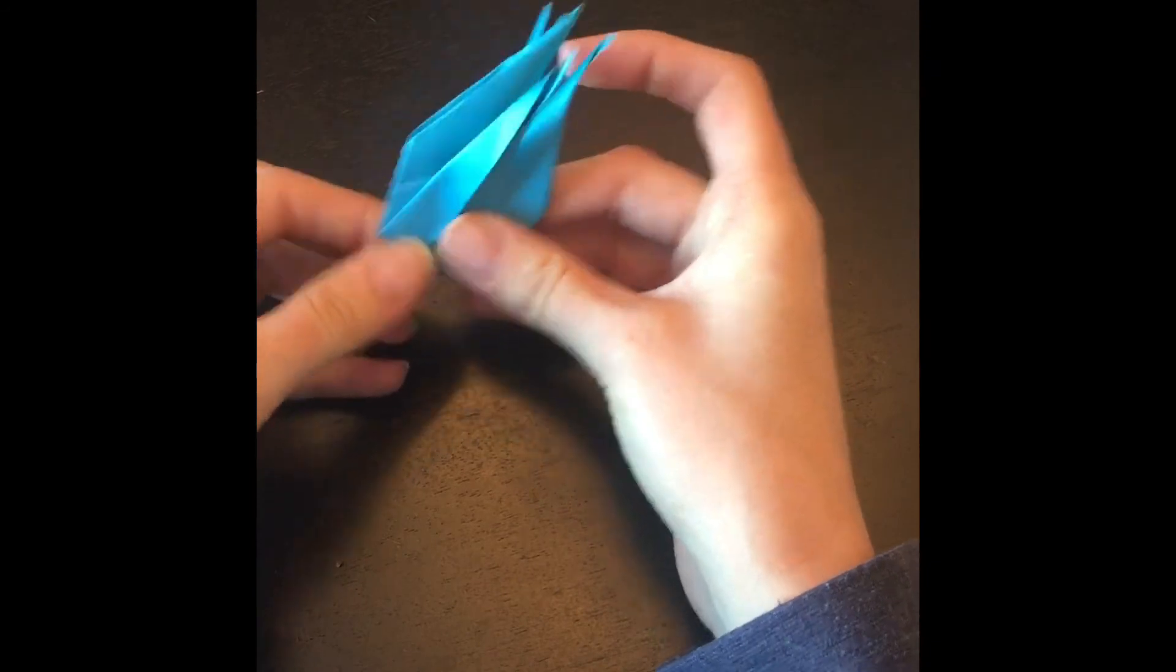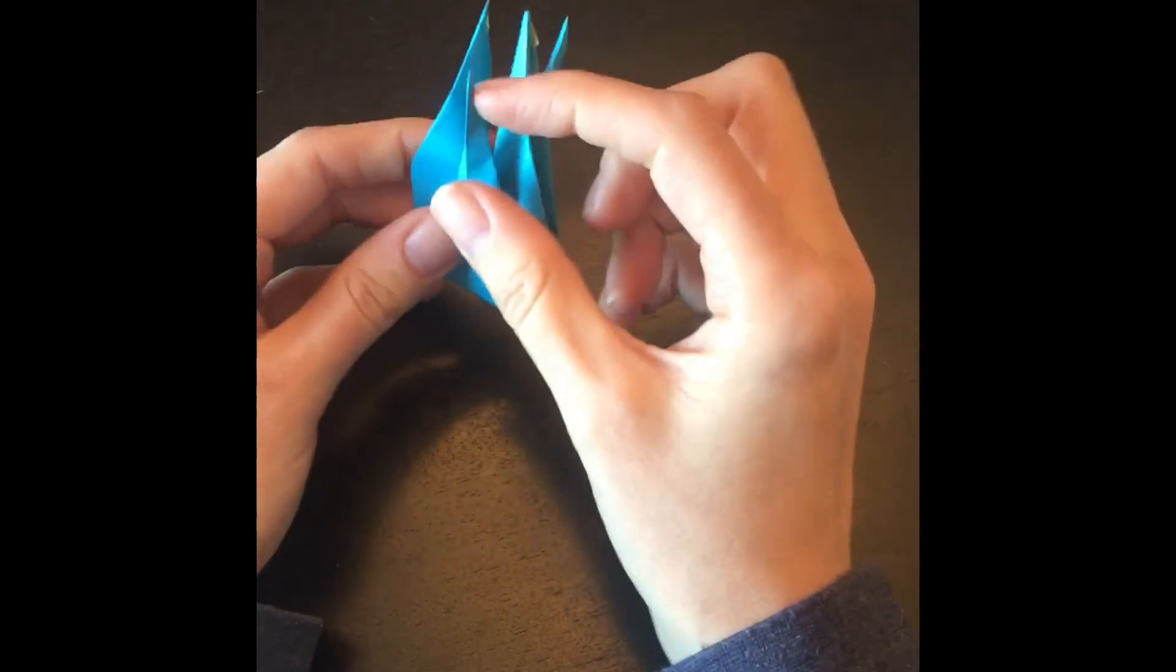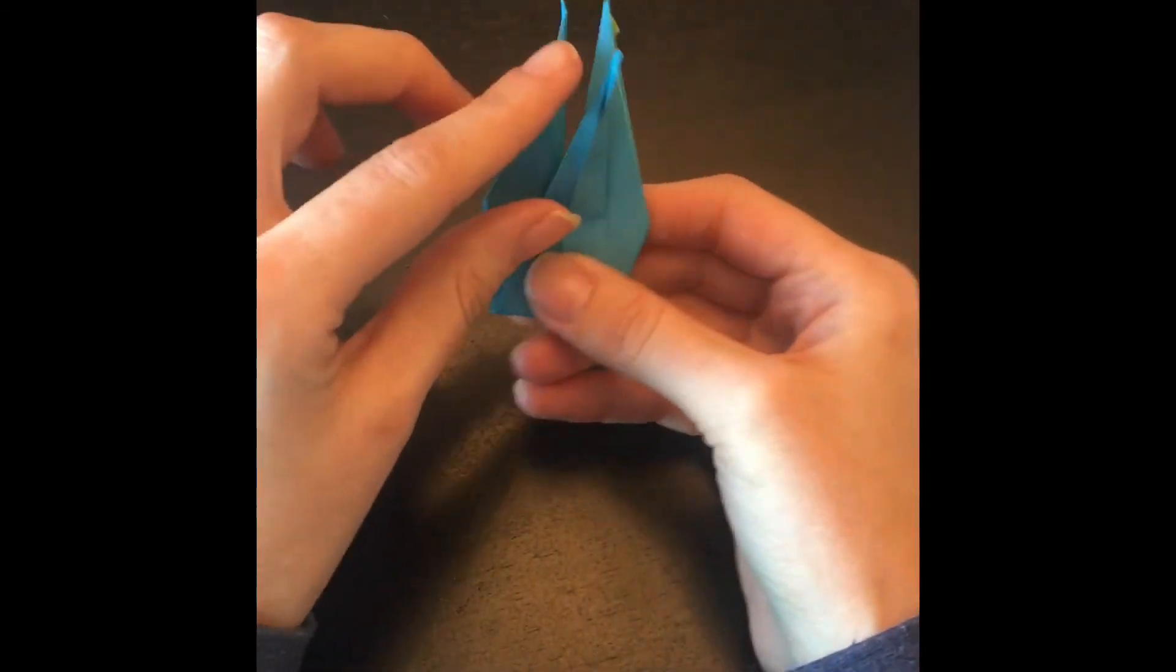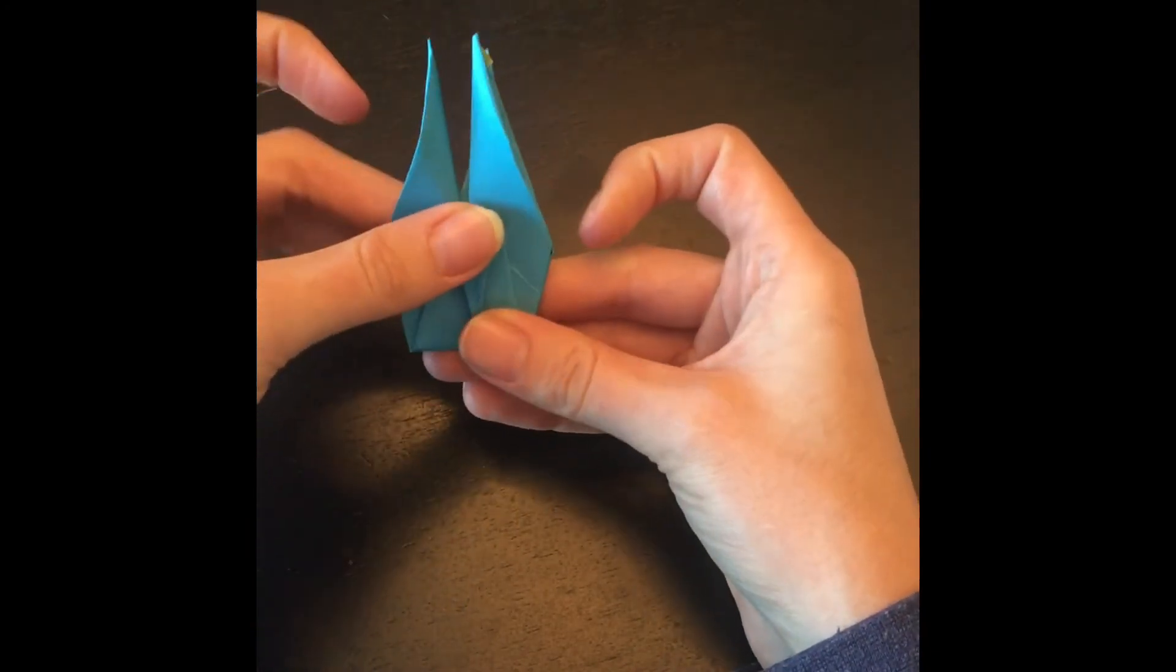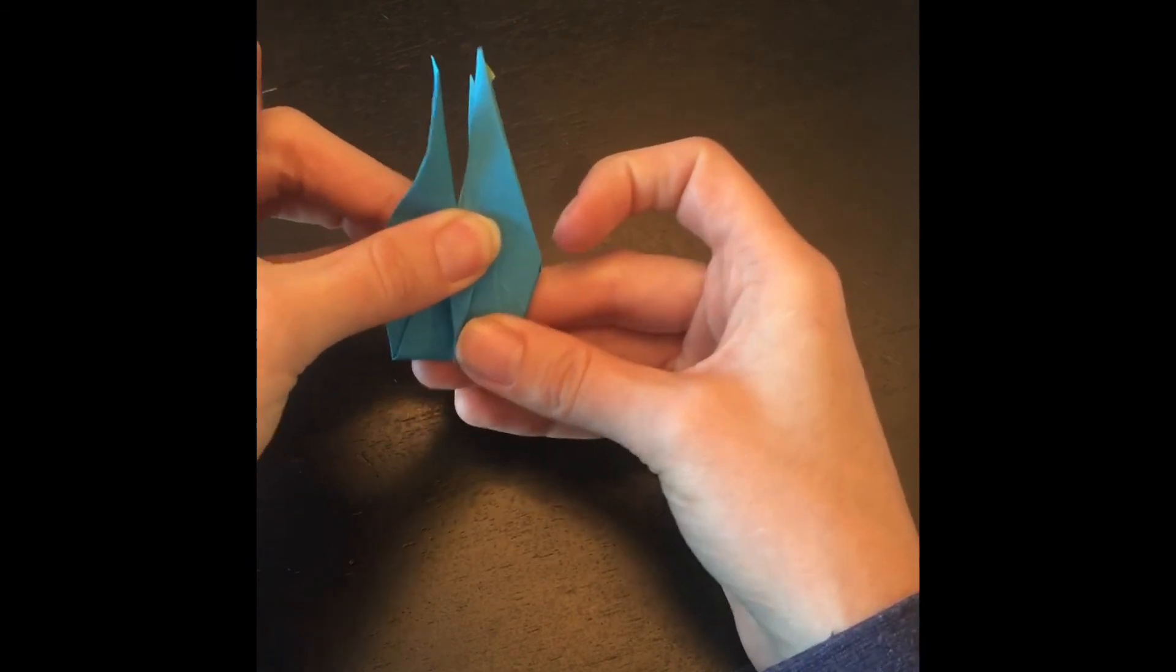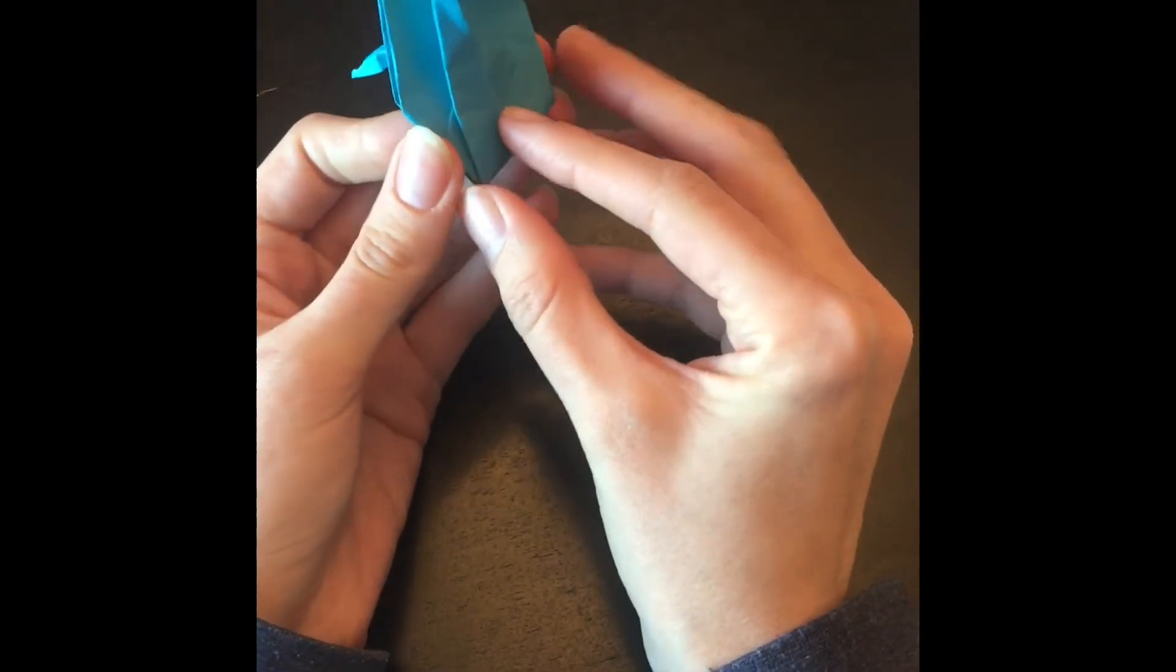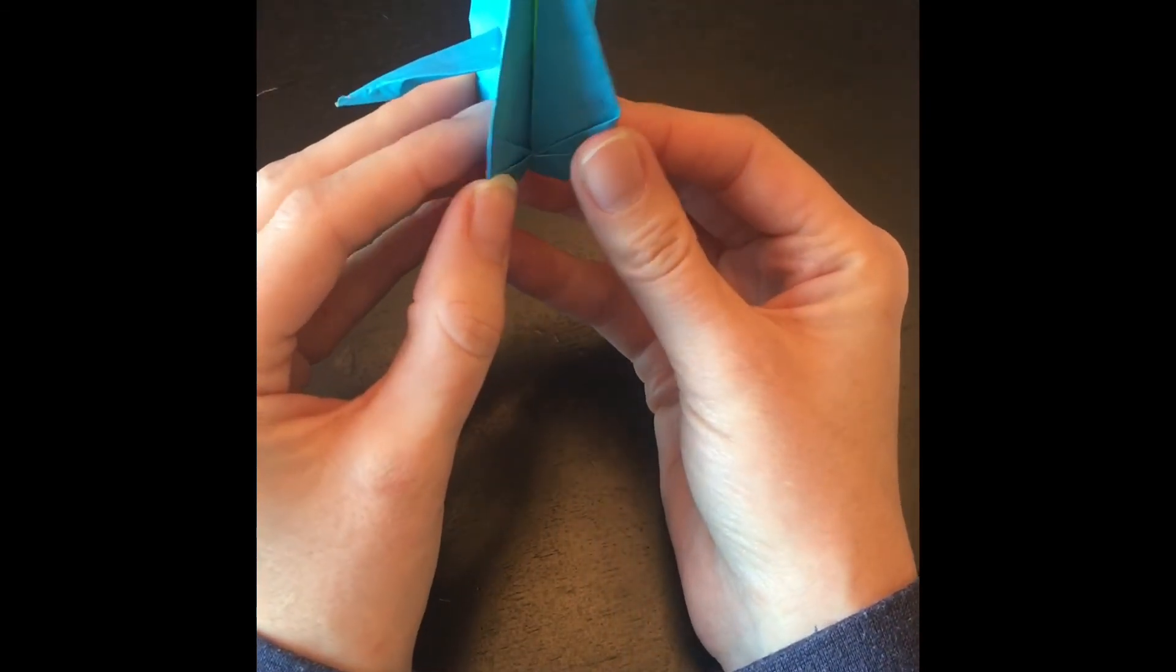Now you can pick which one you want to be the head or the tail. I like to pick the side that I did not fold the nicest to be the head because you can fold that one down. So we'll make this one the head. The crease wasn't too pretty. So fold this one down. And then this one, we're just going to be folding it in.